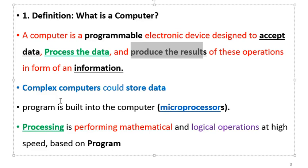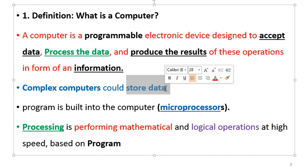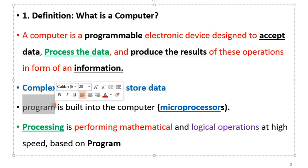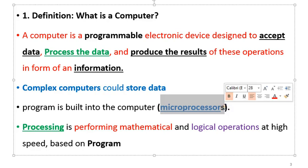If that machine satisfies all the conditions, it can be called a computer. Complex computers have another ability of storing data. The simple ones cannot store data — they process and just produce results. But the complex ones do store data in what we call a memory. Since the computer is programmable, the instructions given to it are called programs, and these programs are built into the microprocessor of the computer. This microprocessor consists of integrated circuit chips acting as the brain of the computer.